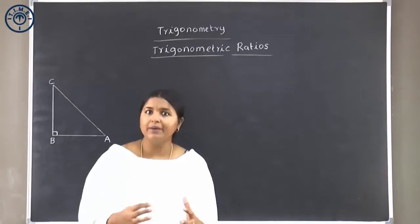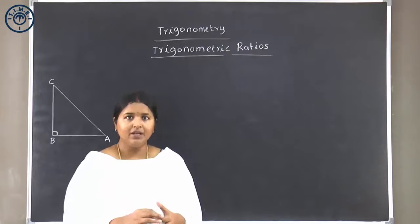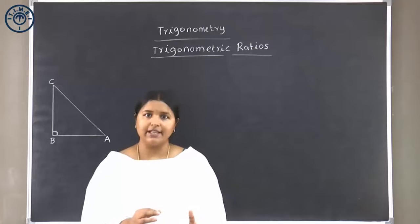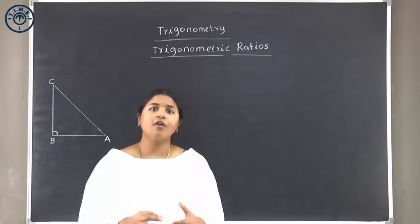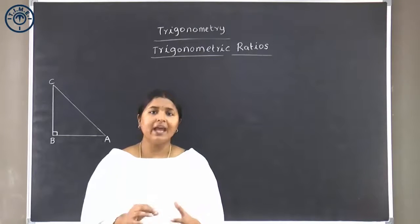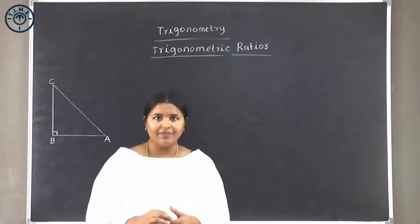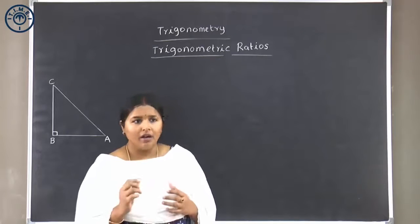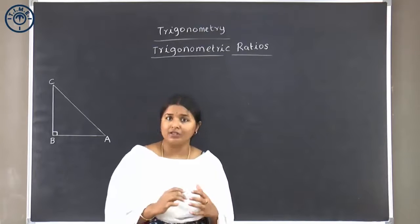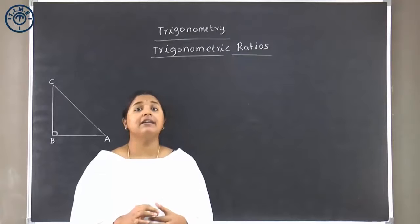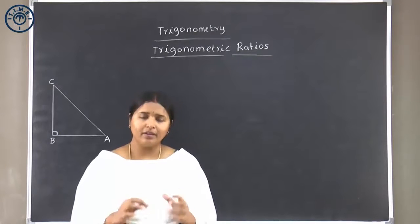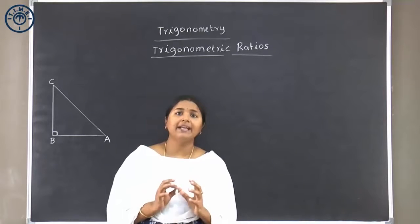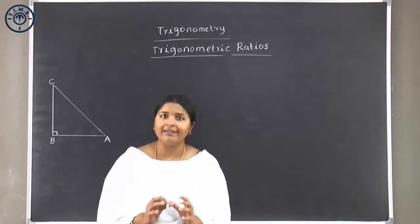The direct application of trigonometry is solving a triangle. A triangle involves six elements — three angles and three sides. When you are given three of these six elements, we can find the other three elements using the concepts of trigonometry. Trigonometry has a lot of practical applications in physical and earth sciences. In particular, we are going to look at the right angled triangle.